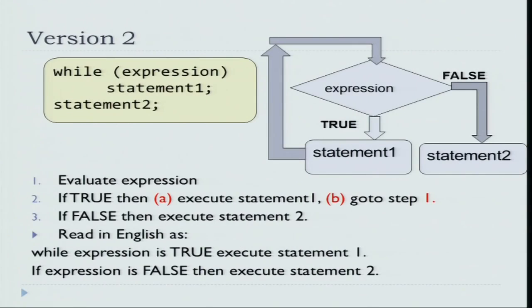A slightly different variant of the while expression will be: while expression, statement 1, and then statement 2. The flowchart here is easy to follow. You first test whether the expression is true. If the expression is true, then you execute statement 1, and then after you execute statement 1, you go back to the expression. If the expression is false, then you go to statement 2. So while the expression is true, execute statement 1, and if the expression is false, then execute statement 2.